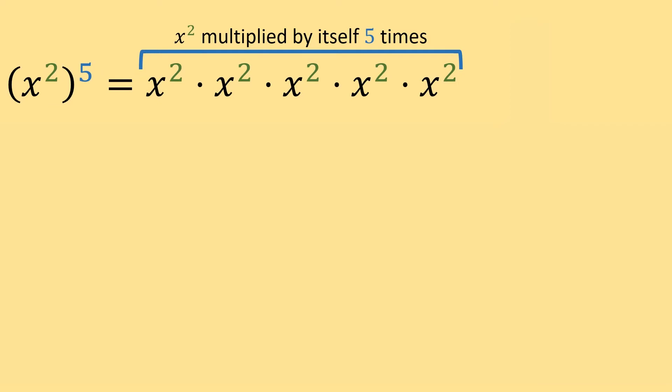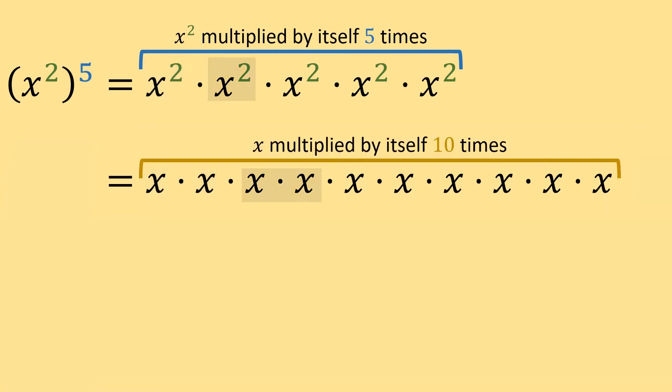And then we could expand each x squared term and replace it with x times x and get this line here, which is just x multiplied by itself ten times. And when we have x times itself ten times, it's the same thing as x to the tenth power. And as you can see, x squared raised to the fifth power is equal to x to the tenth power.